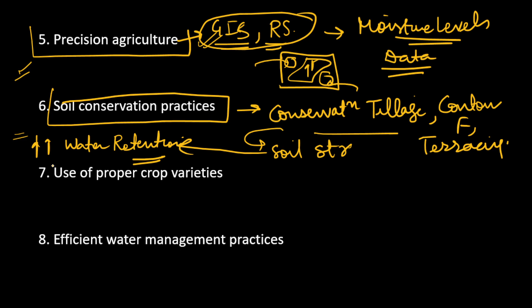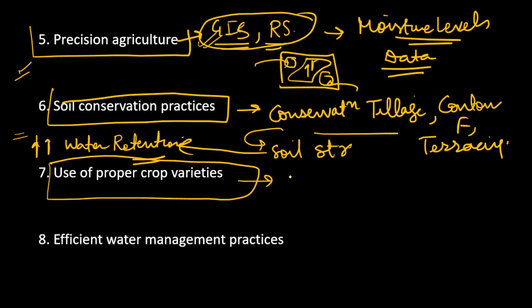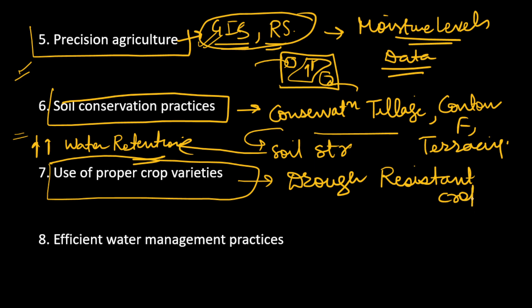We need to use proper crop varieties. For example, rice is a very water-intensive crop, so we need to develop varieties of rice that do not require as much water. We can also develop drought-resistant varieties of crops that can be grown even during droughts. Developing varieties that do not require high amounts of water can be very helpful in sustaining crop production during low-water periods.